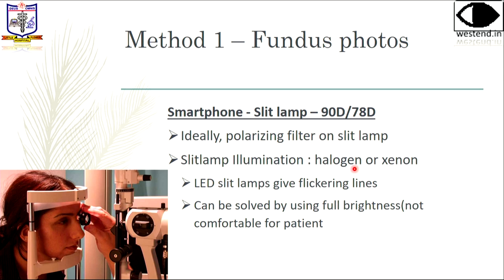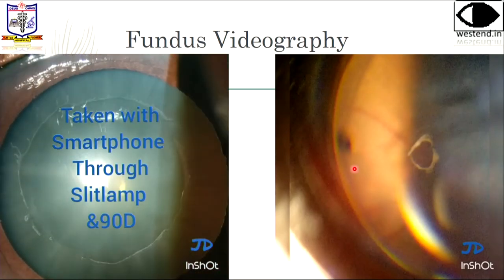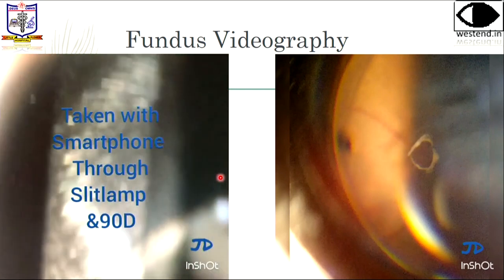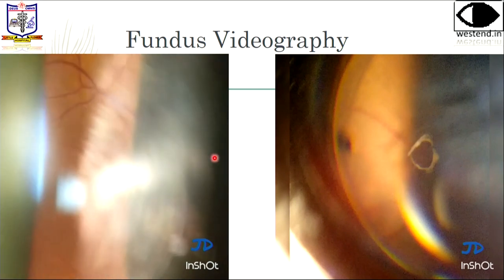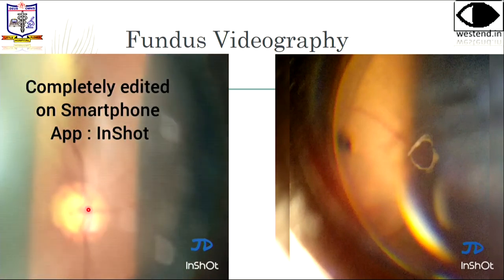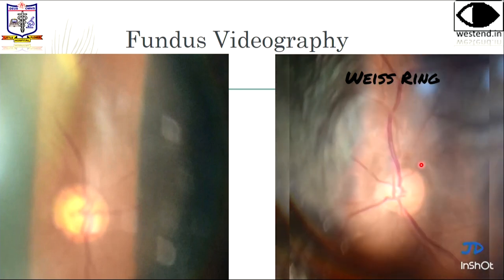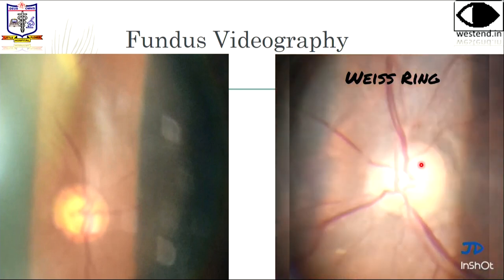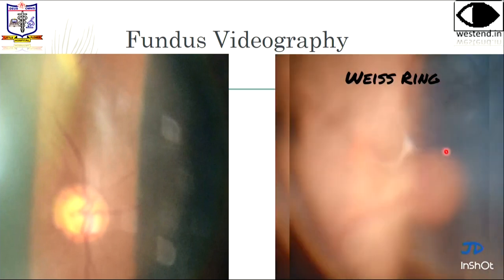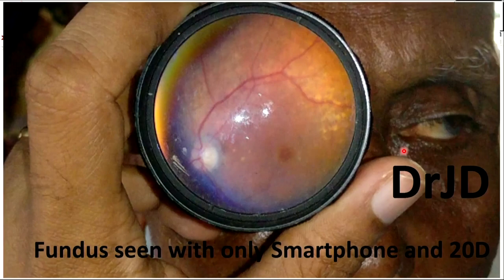You can also do fundus photography through the slit lamp using a 90D with the adapter fixed to the slit lamp. The cost of the adapter is less than 1,000 rupees. You can see the disc and also features like the Weiss ring. You can probably see the Weiss ring on a fundus camera but you can see it better on a slit lamp because of the adjustable illumination. The other method is without any adapter — just a smartphone and a 20D lens — and this technique is also published.